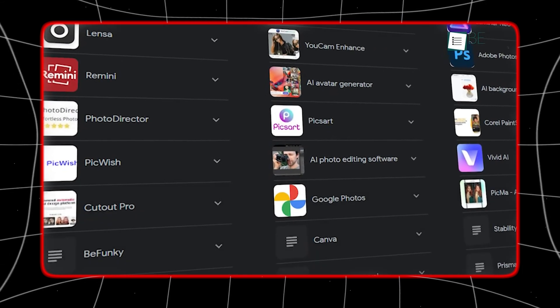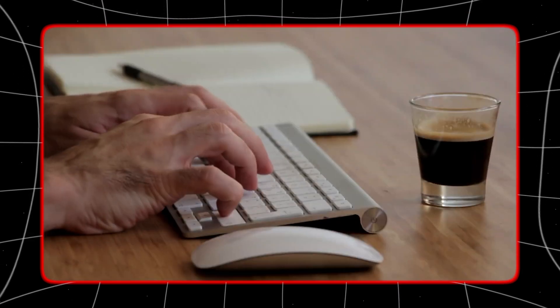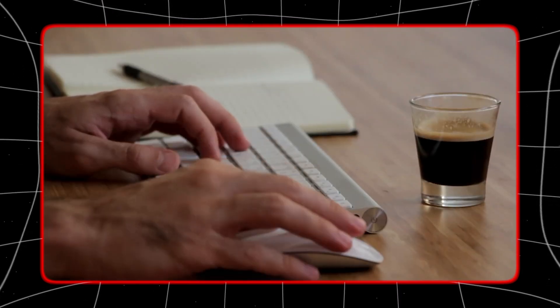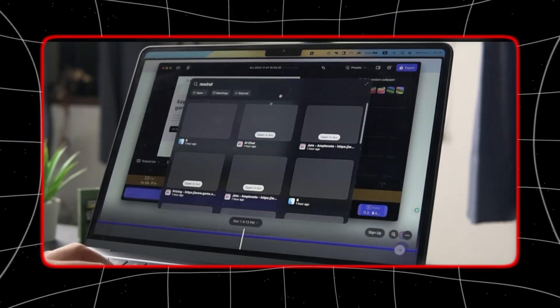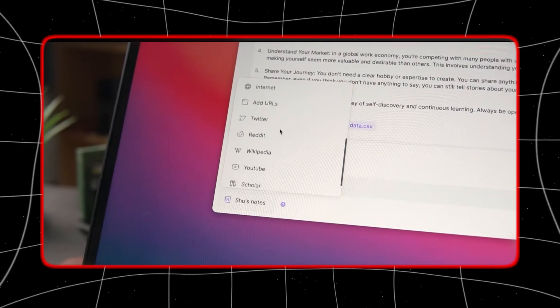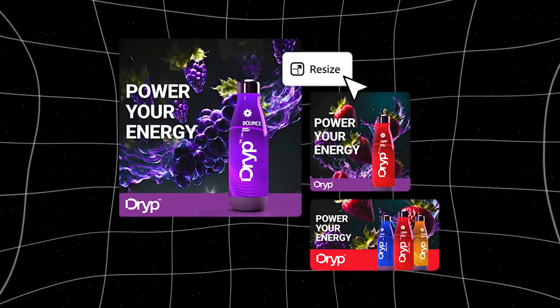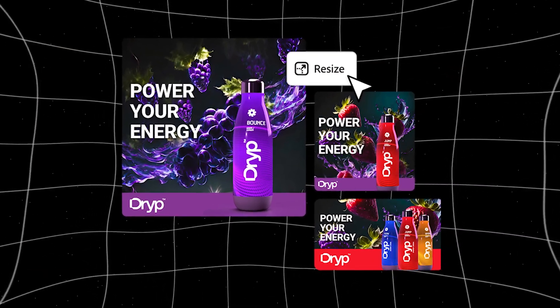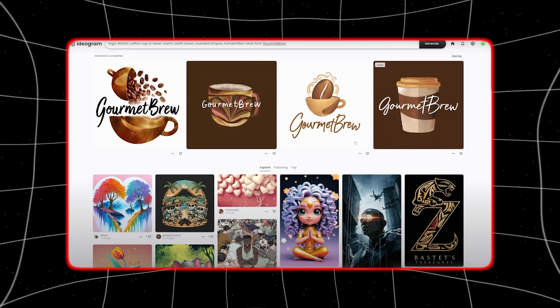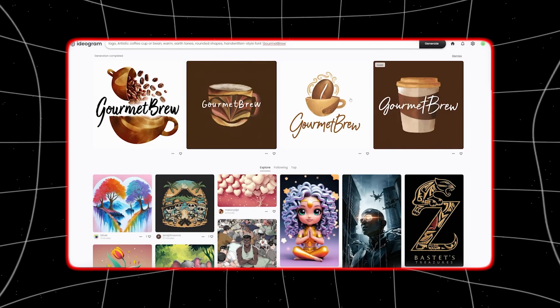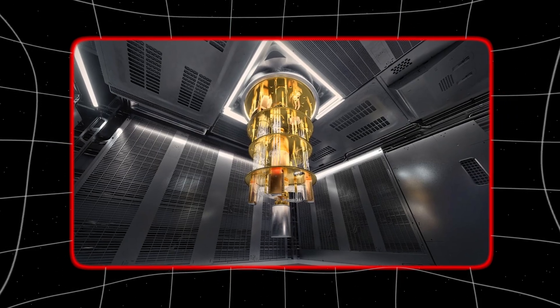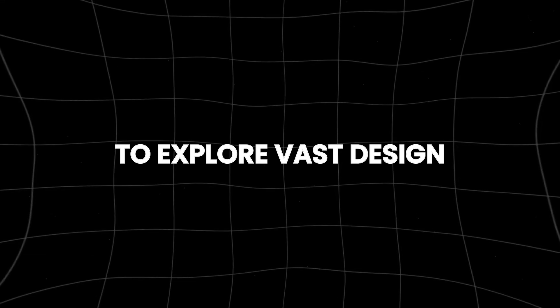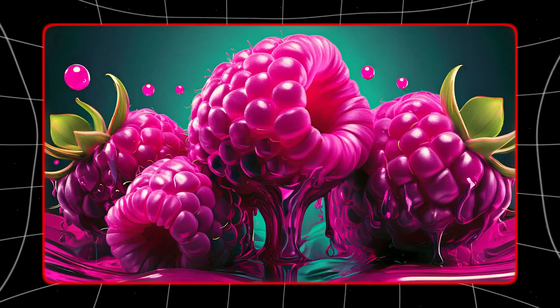Let's say you need to design a new logo for your business. Instead of spending hours sketching and refining ideas, you can input some basic parameters into the quantum-enhanced generative AI system, and watch as it rapidly generates a multitude of logo concepts in seconds. These concepts are not just random variations, but are intelligently crafted based on the input criteria, leveraging the power of quantum computing to explore vast design spaces efficiently.